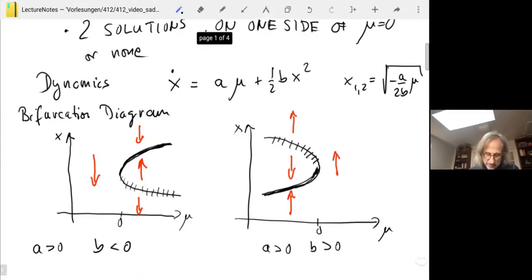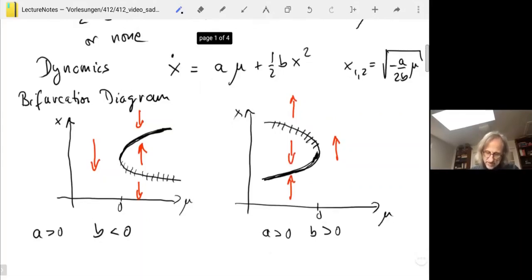So qualitatively, there are two more diagrams. If you flip the sign of a and b now, then the fixed point lines don't change, but stability changes around. So there are four cases, but I'm not going to derive the other ones. They're straightforward to get from here.